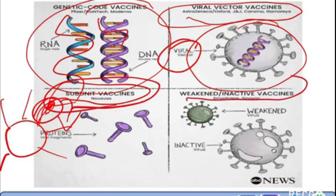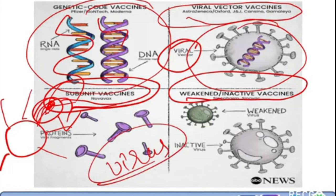There is also the weakened or inactivated vaccine, where the whole coronavirus has been taken and inactivated or weakened. It may be killed by use of chemicals or heat, or weakened using some chemicals so that it won't cause disease in the human body.